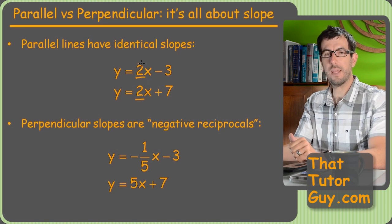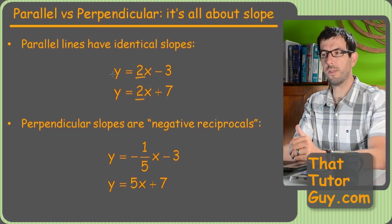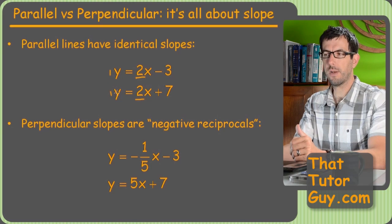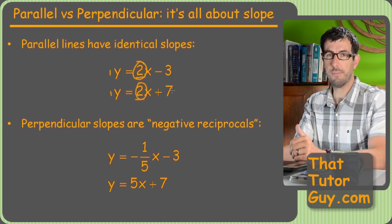Two in front of the x's. Now remember, the number in front of the x is only the slope of the line if there's a one in front of the y. But because both these have sort of an imaginary one in front of them, that means the slopes of each is two.